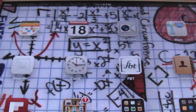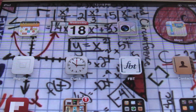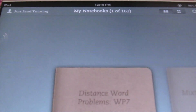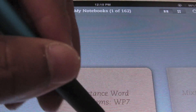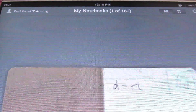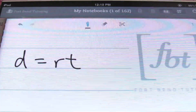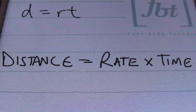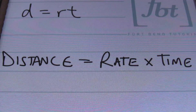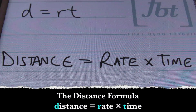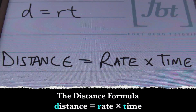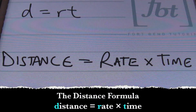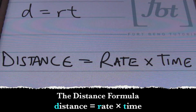Hello, ladies and gentlemen. This is Mr. Whitt with Fort Bend Tutoring, and today's tutorial is going to be about distance word problems — our seventh word problem video for you. I have my equation: distance equals rate times time. That's exactly what we'll be using as we solve these distance problems.